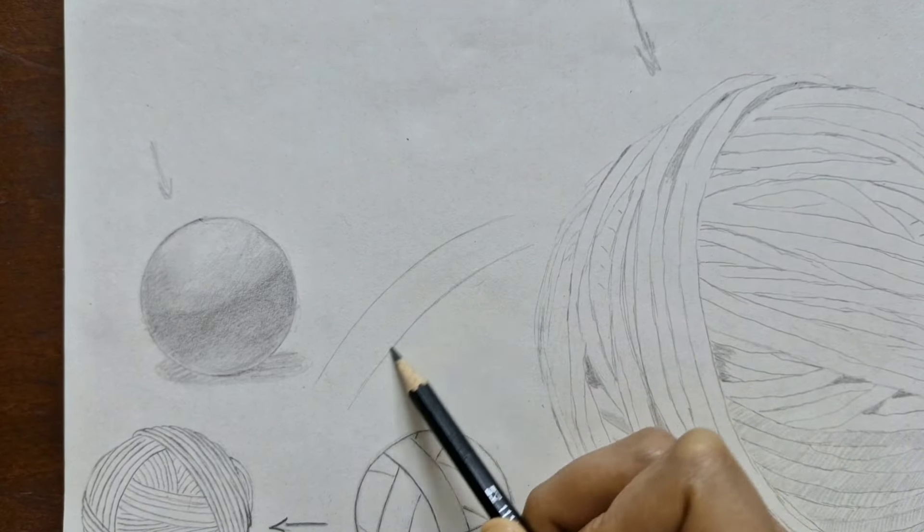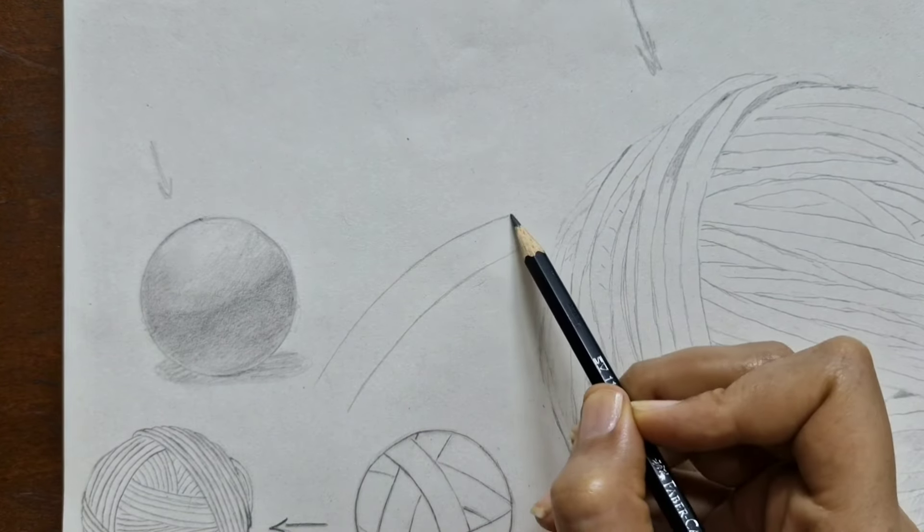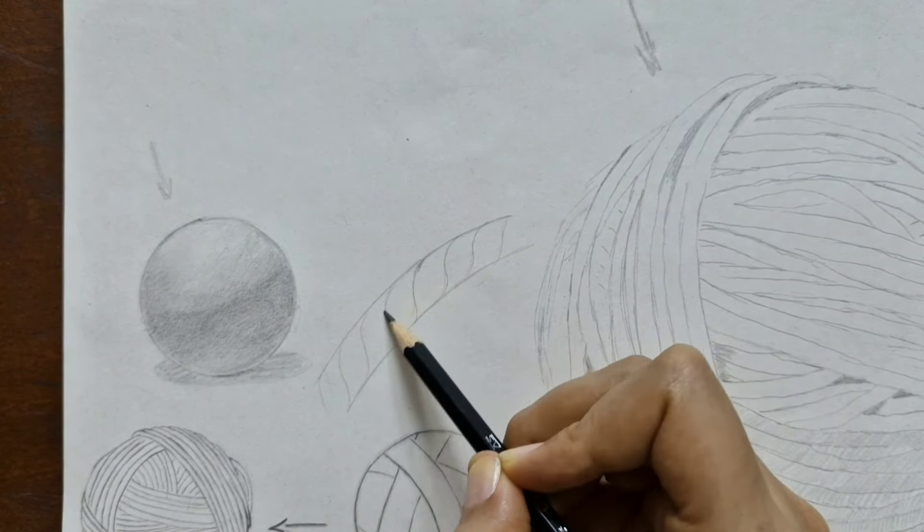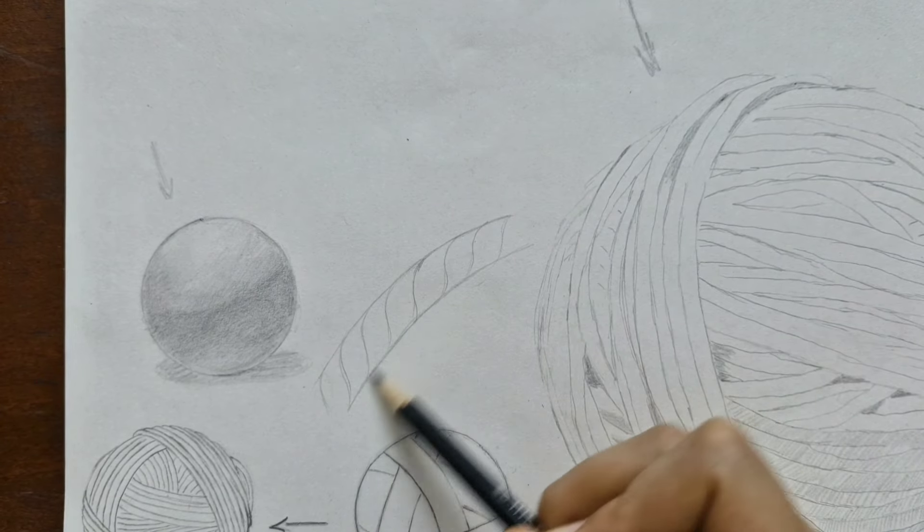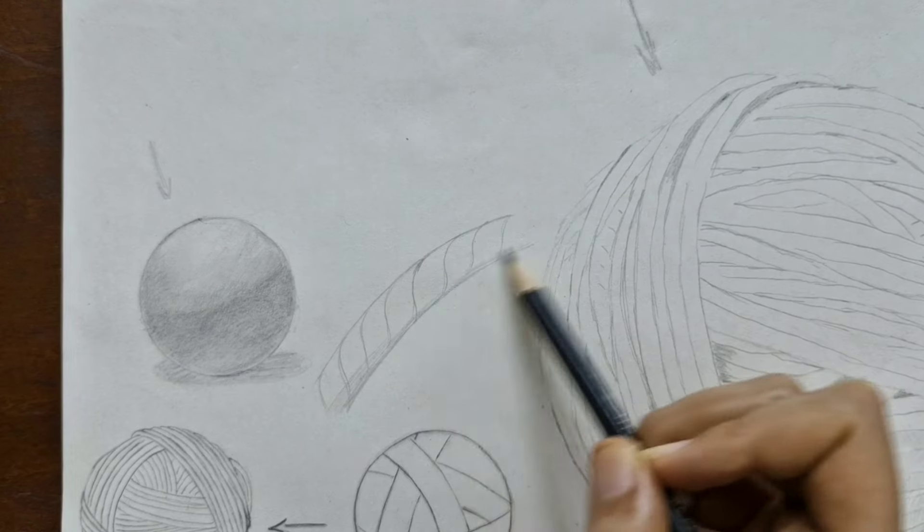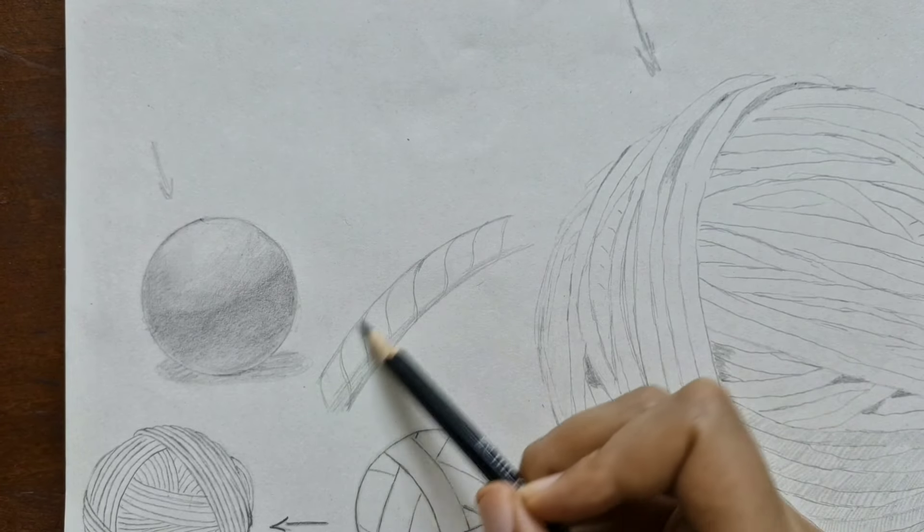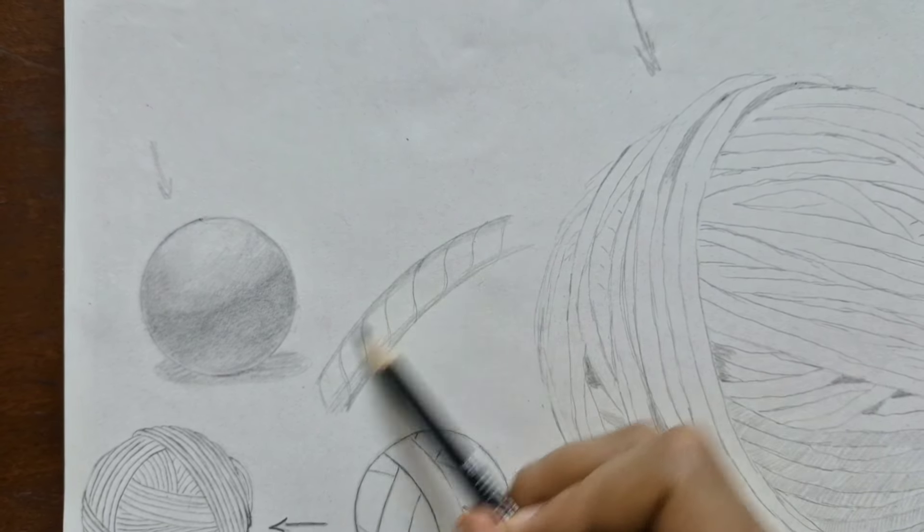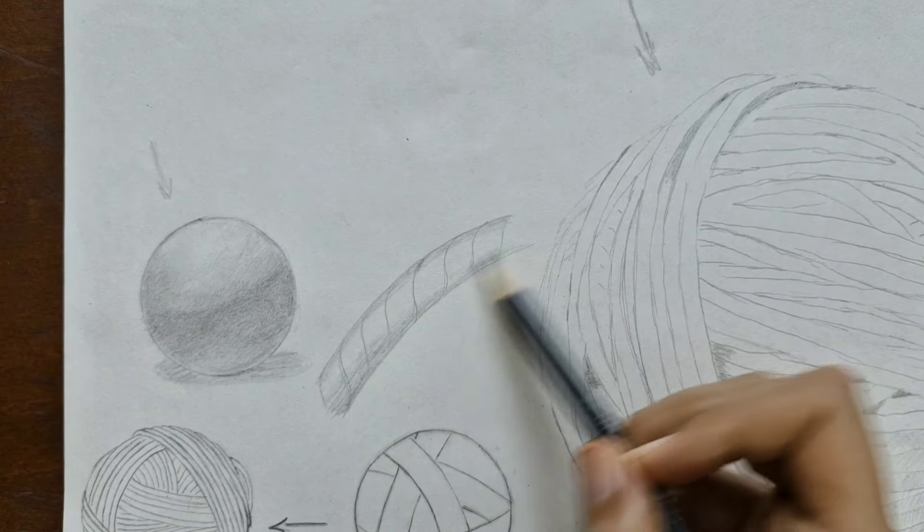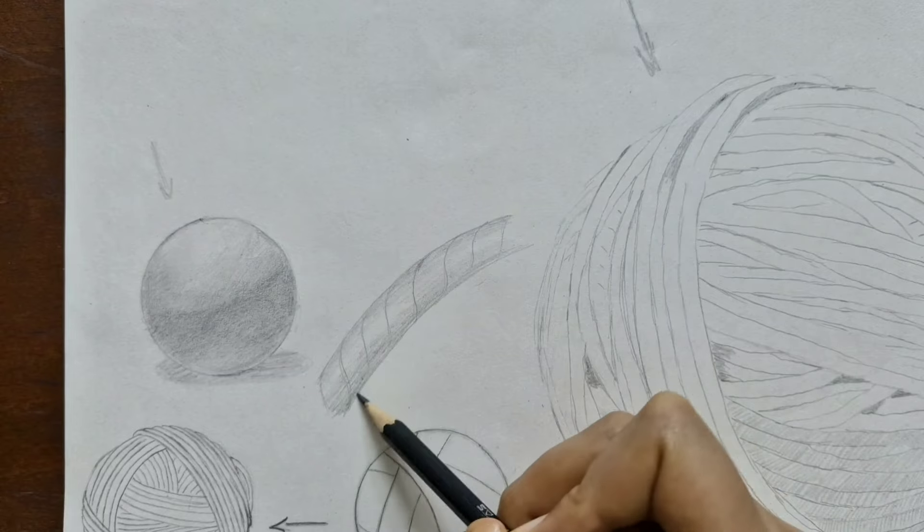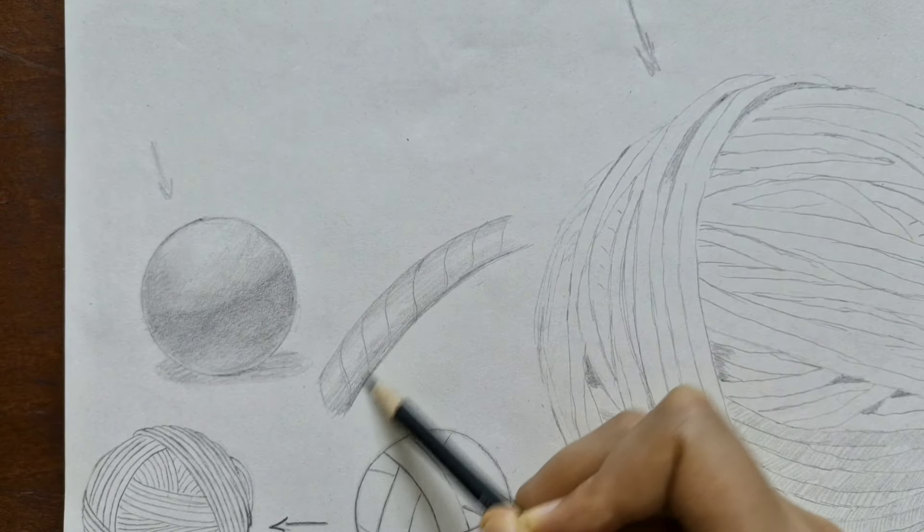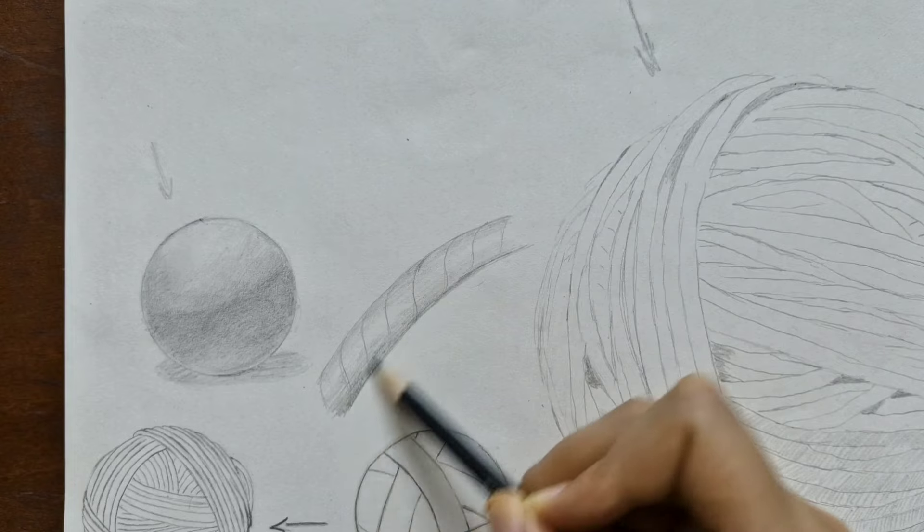Before we dive into the main shading part let's talk about those individual yarn strands. Imagine each one of them as a little tube or cylinder. We need to shade them in a way that makes them look round not flat. With a light source like this when you're shading a cylinder the middle part gets the most light and the edges are darker because they get less light. So when you shade your yarn strands think about that. The edges should be darker and the middle should be lighter. Make sure the transition from dark to light is smooth not sudden or sharp.